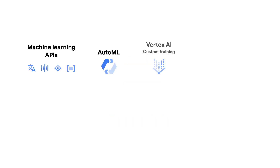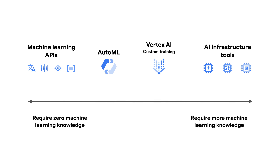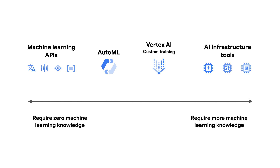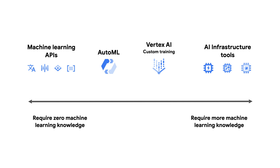Google Cloud has many different machine learning products for developers to use. These span a wide spectrum depending on your experience level and project needs. On one side, we have machine learning APIs, which you can use even if you have little machine learning experience yourself. On the other side, we have Vertex AI and AI infrastructure products, which allow you to build and deploy your own custom machine learning models. Let's take a closer look.